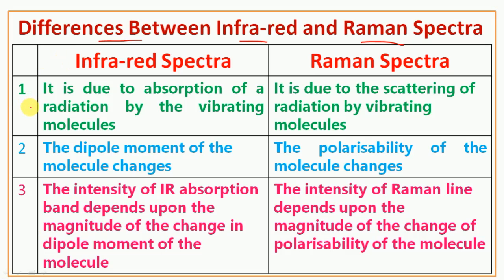There are six points of difference between Infrared Spectra and Raman Spectra. The first point: in Infrared Spectra, it is due to absorption of radiation by the vibrating molecules. In Raman Spectra, it is due to the scattering of radiation by vibrating molecules.